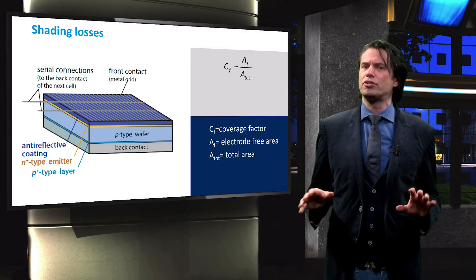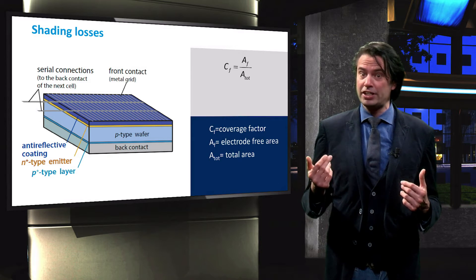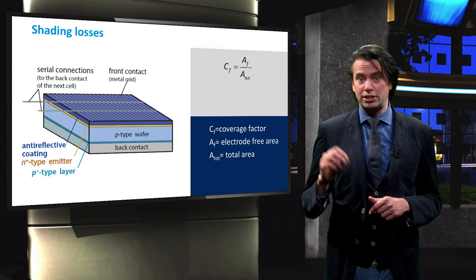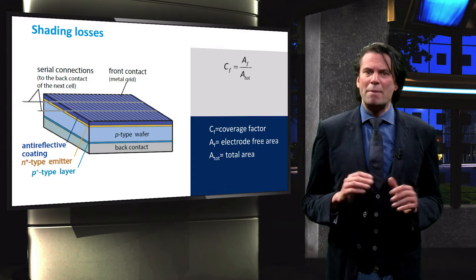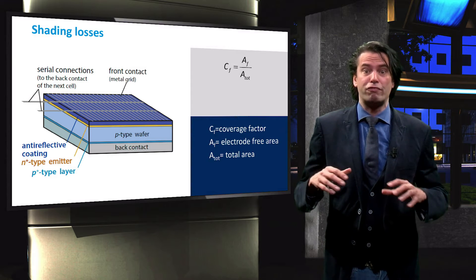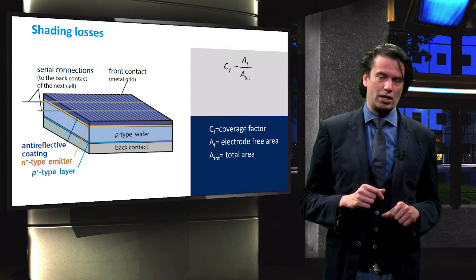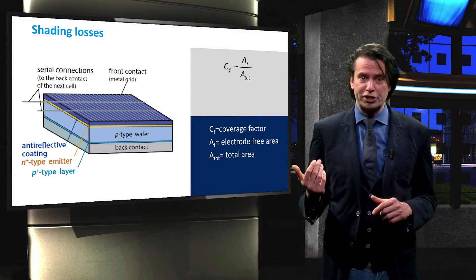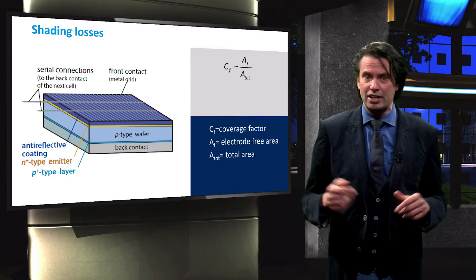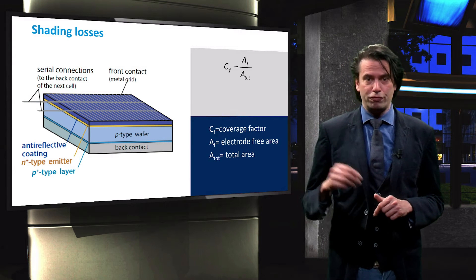Since the area under the electrodes is shaded, the active area of the solar cell is effectively decreased. The coverage factor, denoted by CF, is a measure of the active area of the solar cell, as it indicates the fraction of the total area of the solar cell that is not covered by electrodes. The coverage factor is therefore equal to the electrode-free area, denoted by AF, divided by the total area of the solar cell.